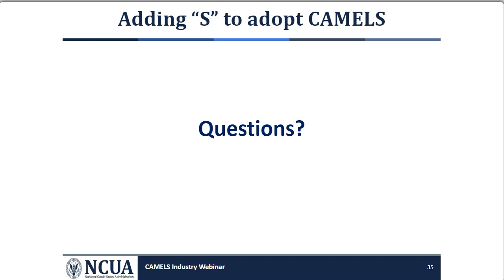If a credit union exam is in process prior to April 1st of 2022, will examiners be evaluating the new S component? If a credit union exam is in process before April 1st, the examiner will not be assigning an S rating. The effective date of CAMELS is for exams that start on or after April 1st. So the examiner will still be evaluating sensitivity to market risk or interest rate risk, but will include that assessment in a combined L component.